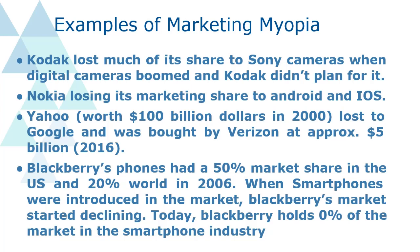Another example is Yahoo, which was king — a monopoly — before Google came to market. They were into email services, search services, and e-news or e-magazine services, but they failed to cater to the whole market and failed to do more research. Google took their place by constantly coming up with new concepts, whether Gmail, YouTube, search engine, and so on.